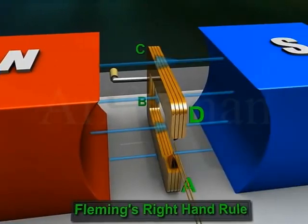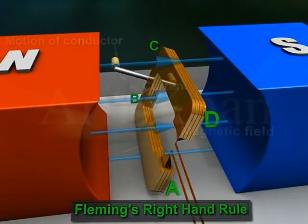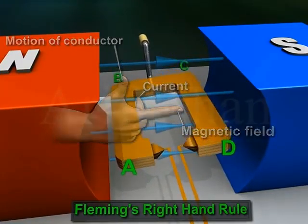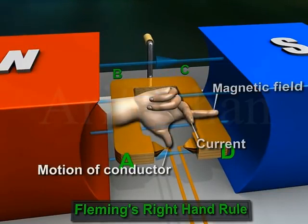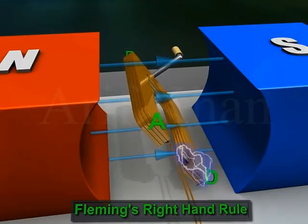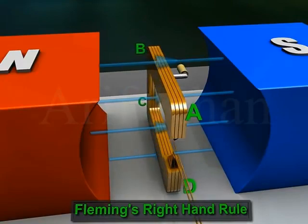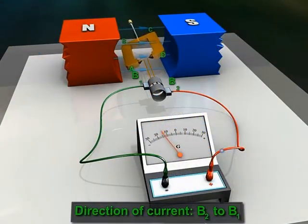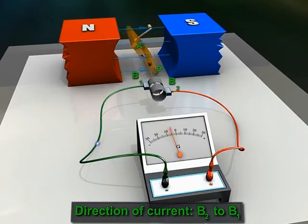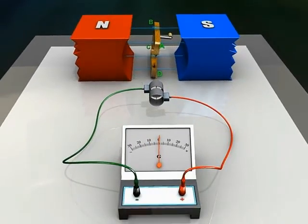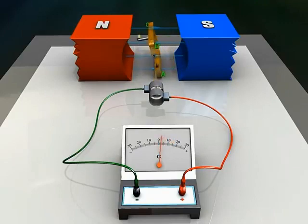During the next half rotation, arm AB moves up while arm CD moves down. Again by Fleming's right-hand rule, current will flow in the direction ABCD, that is from B2 to B1 through the galvanometer. Thus the induced current changes its direction every half rotation.